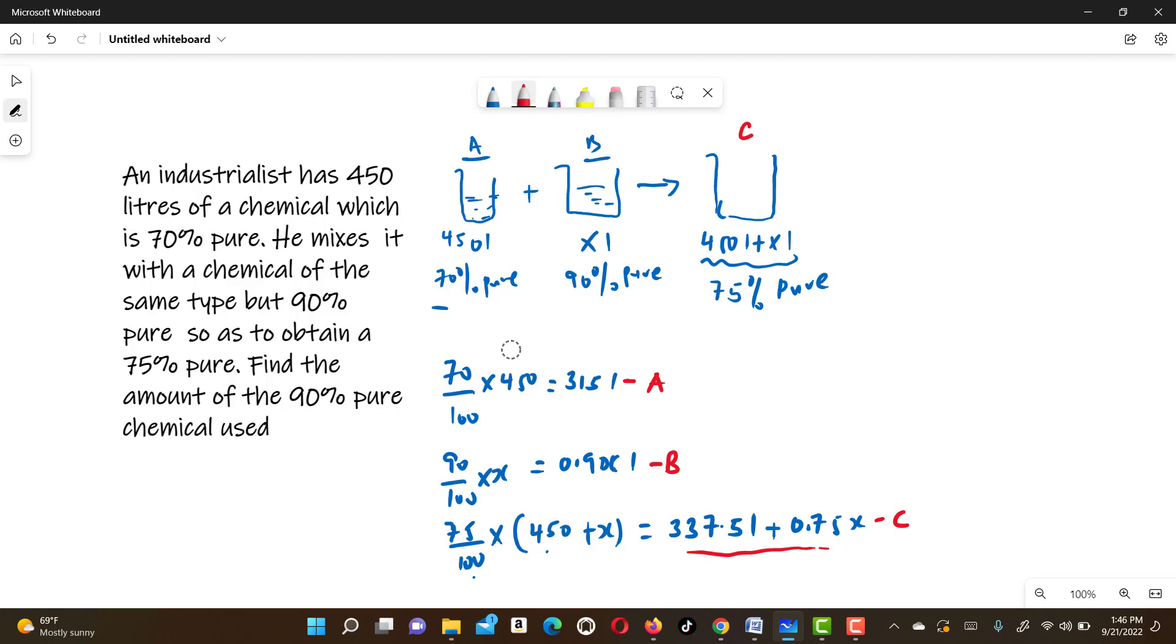So what we're going to do is that A plus B will give us C. That will be 315 plus 0.9X will give us 337.5 plus 0.75X.